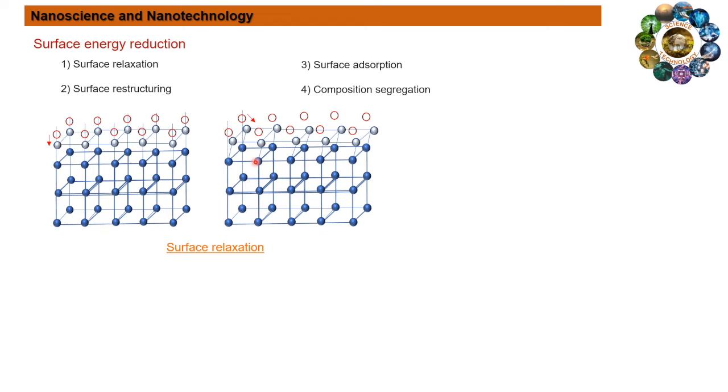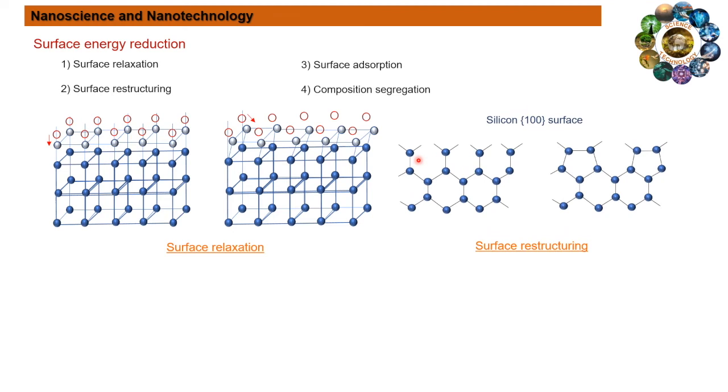However, such an inward and lateral shift of surface atoms would result in a reduction of the surface energy. Next one is surface restructuring. Surface restructuring takes place through combining surface dangling bonds into new chemical bonds.